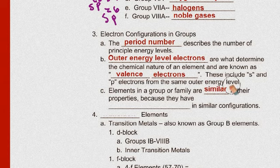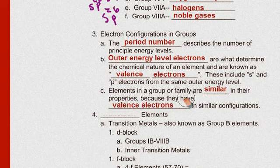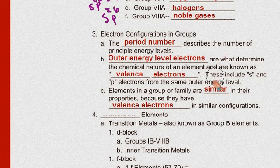All right. Now the electrons in the group or family are similar in their properties because they have similar valence electrons in their configurations. And those S and P electrons are the valence electrons. Now this brings us to the transition elements.